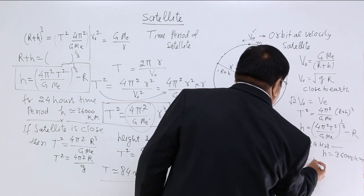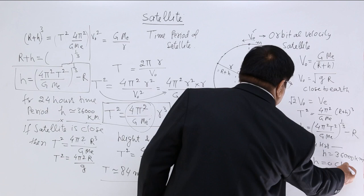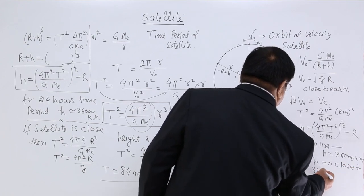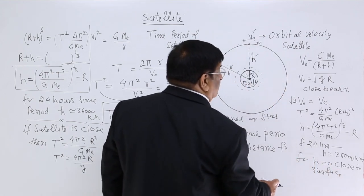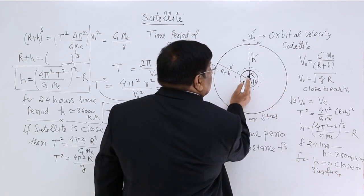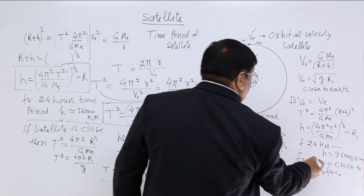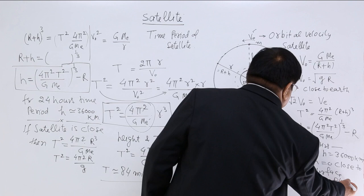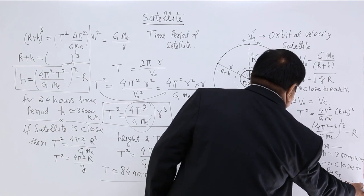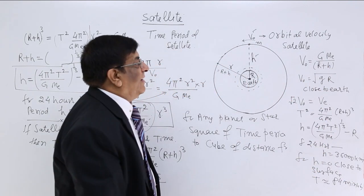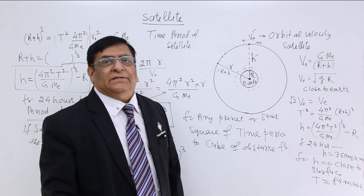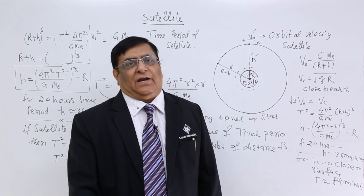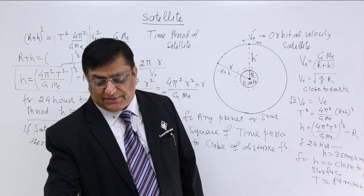This is for the time period. So for 24 hours, h is equal to 36,000 kilometer. For h zero, that is close to surface. That means h is zero, but this r is there. So the time period is approximately 84 minutes. So these are the few data you must remember so far. In the next lecture, we will see what are the energy involvements in satellite. How much energy it has. Thank you.